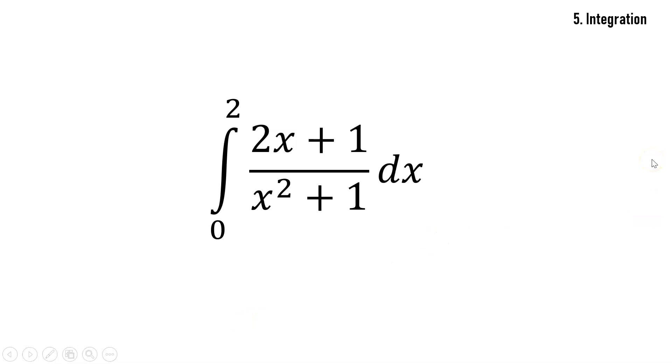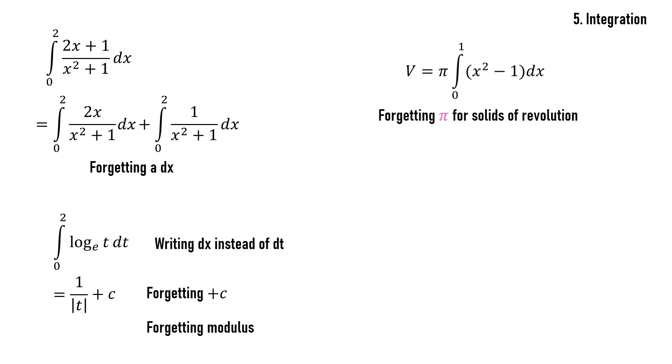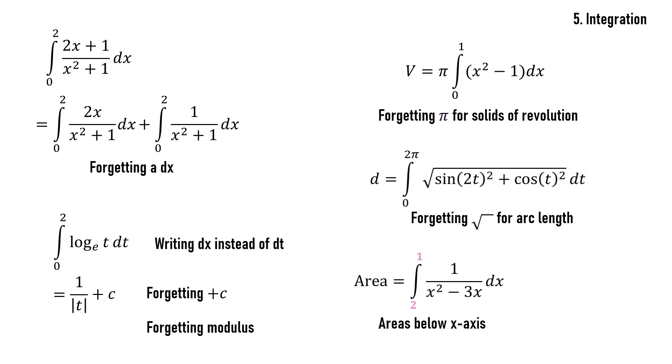So this one's going to cover several of the common errors with integration because it's such a big part of the course. First one is forgetting to write a dx on the end of an integral. So always check that. Next one is writing a dx when it should be a dt. Next one is integrating, but then forgetting to add your constant of integration. That can really mess you up. Integrating log and forgetting a modulus. Calculating a volume of a solid and forgetting the π. Calculating an arc length integral and forgetting the square root. And of course, finding the area of a function that's below the x-axis and forgetting to reverse the sign. So a lot of possible errors there, but there's a lot of different types of integrals and it's just wise to be careful.